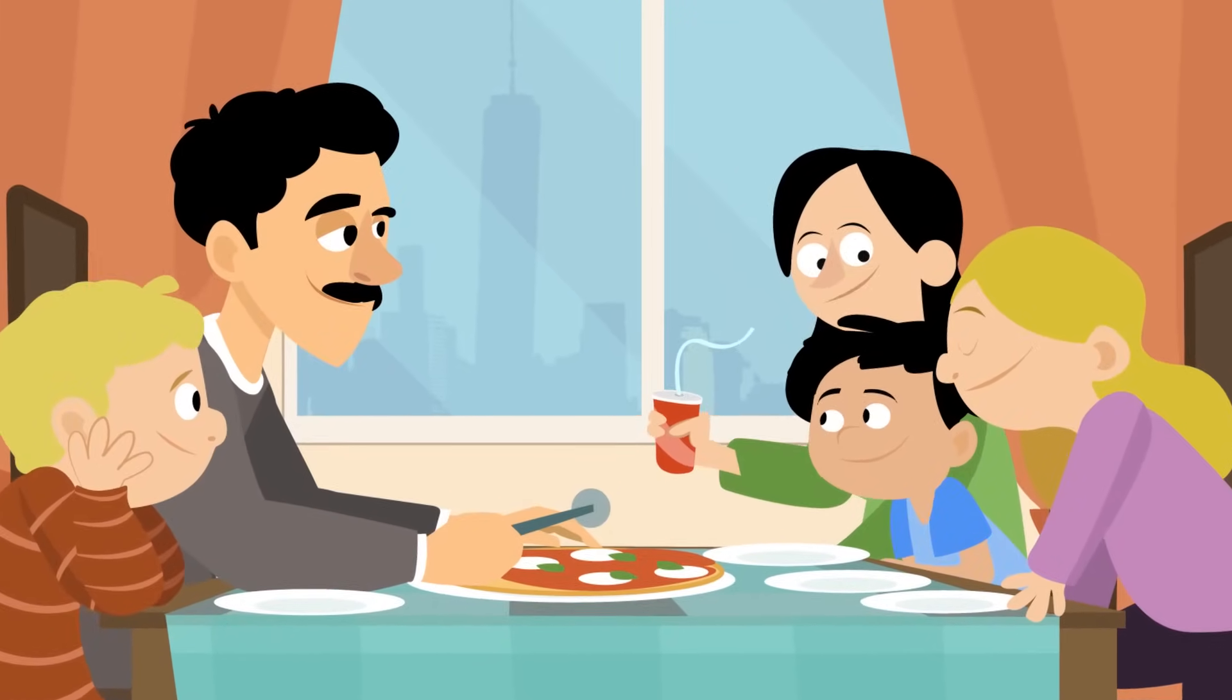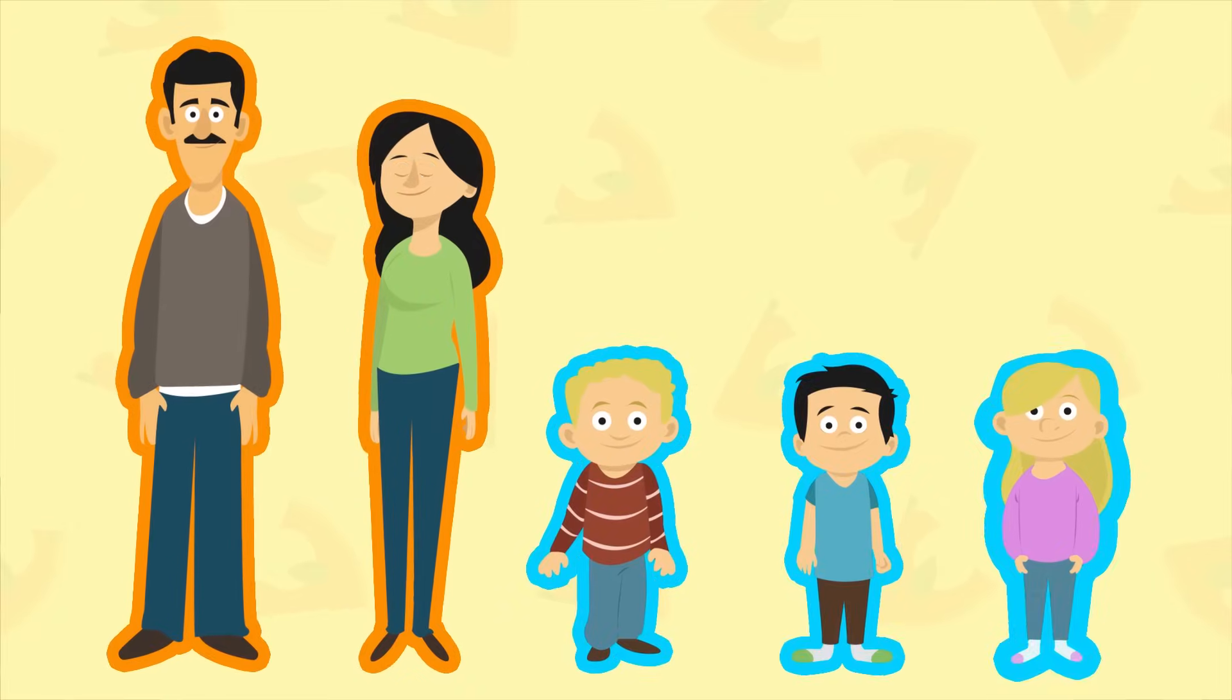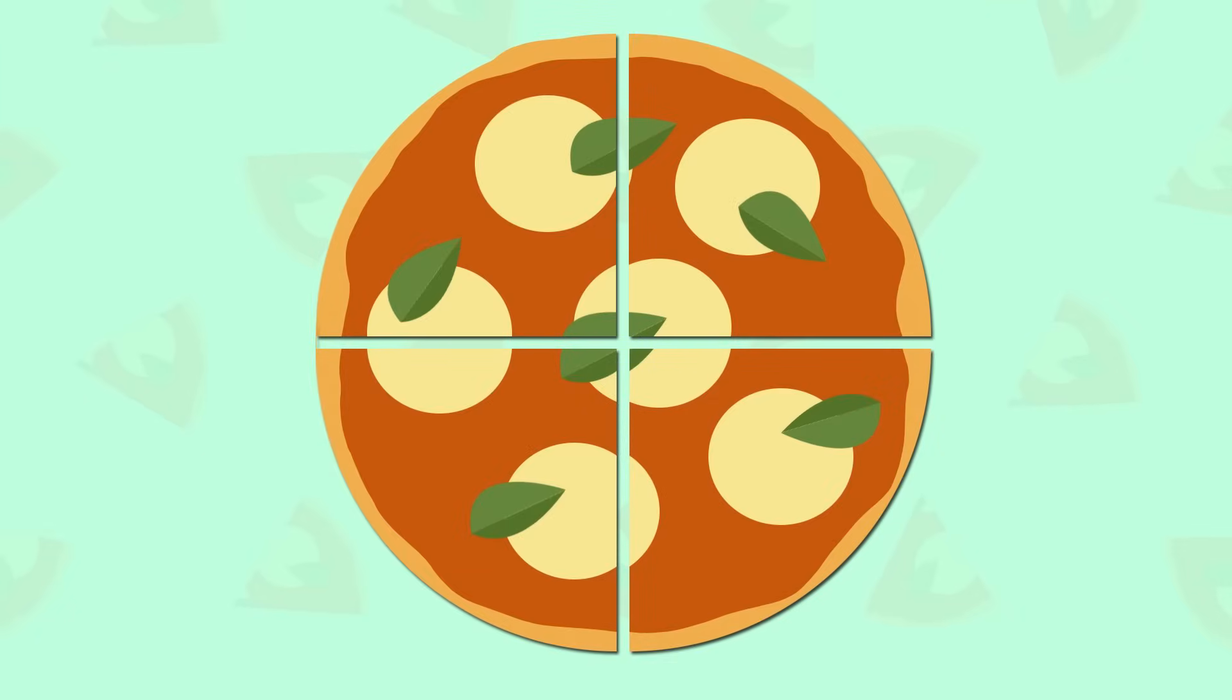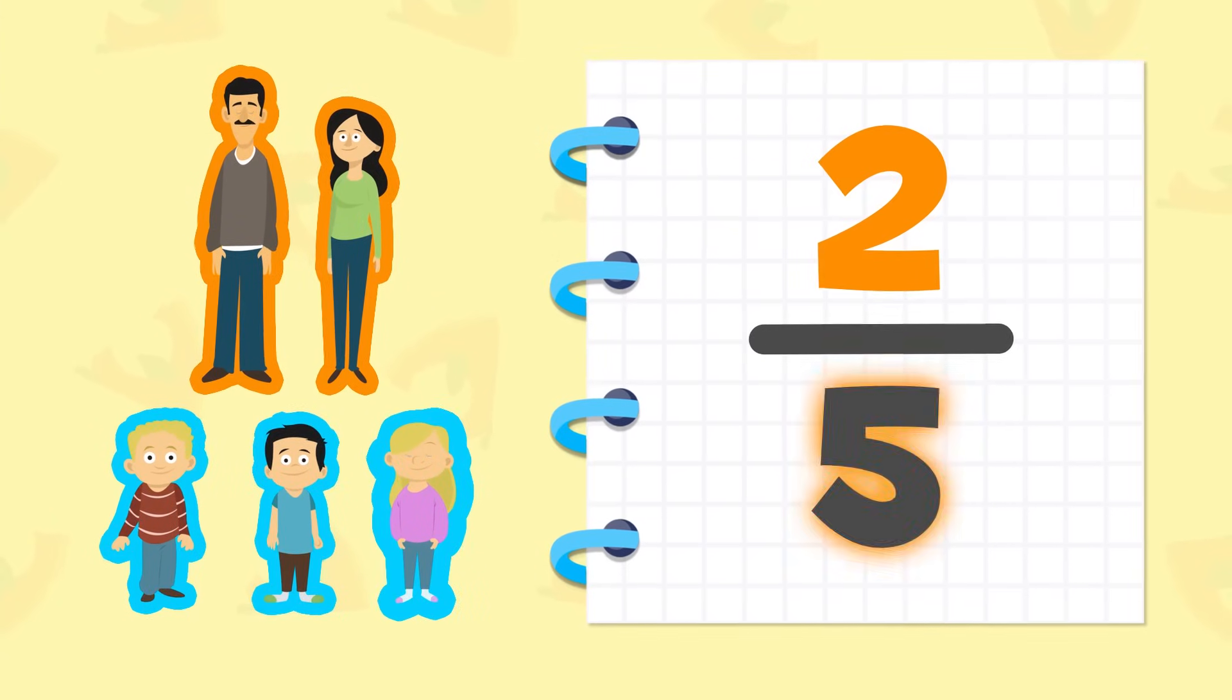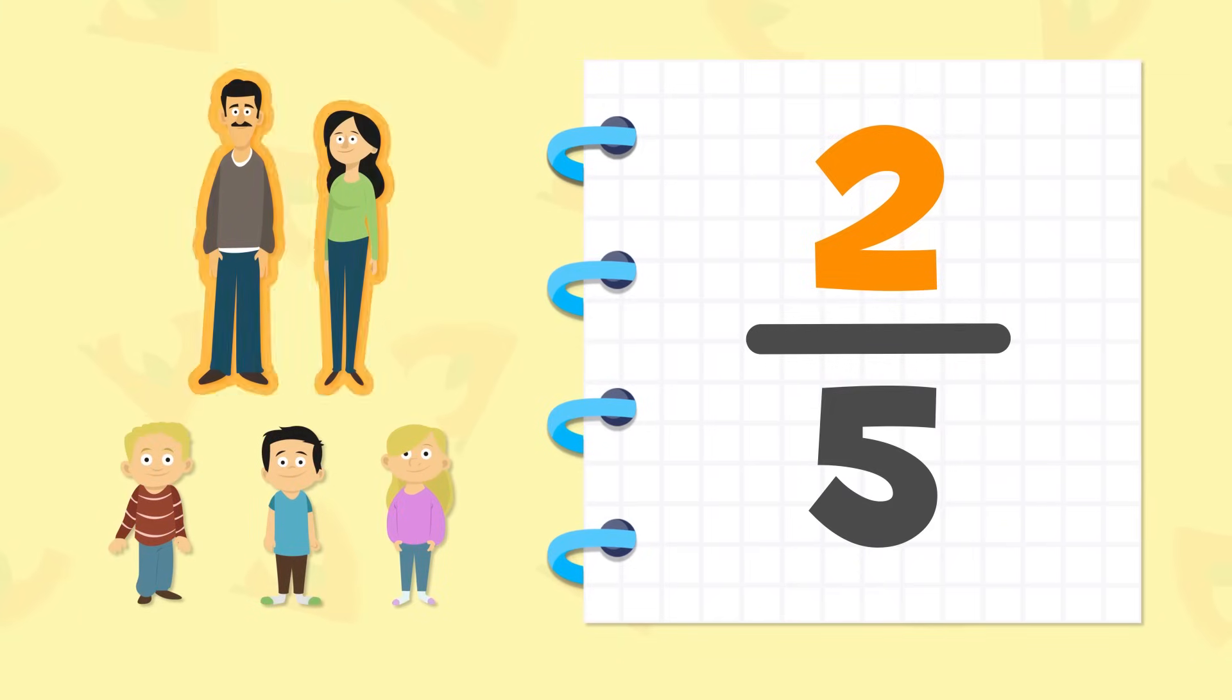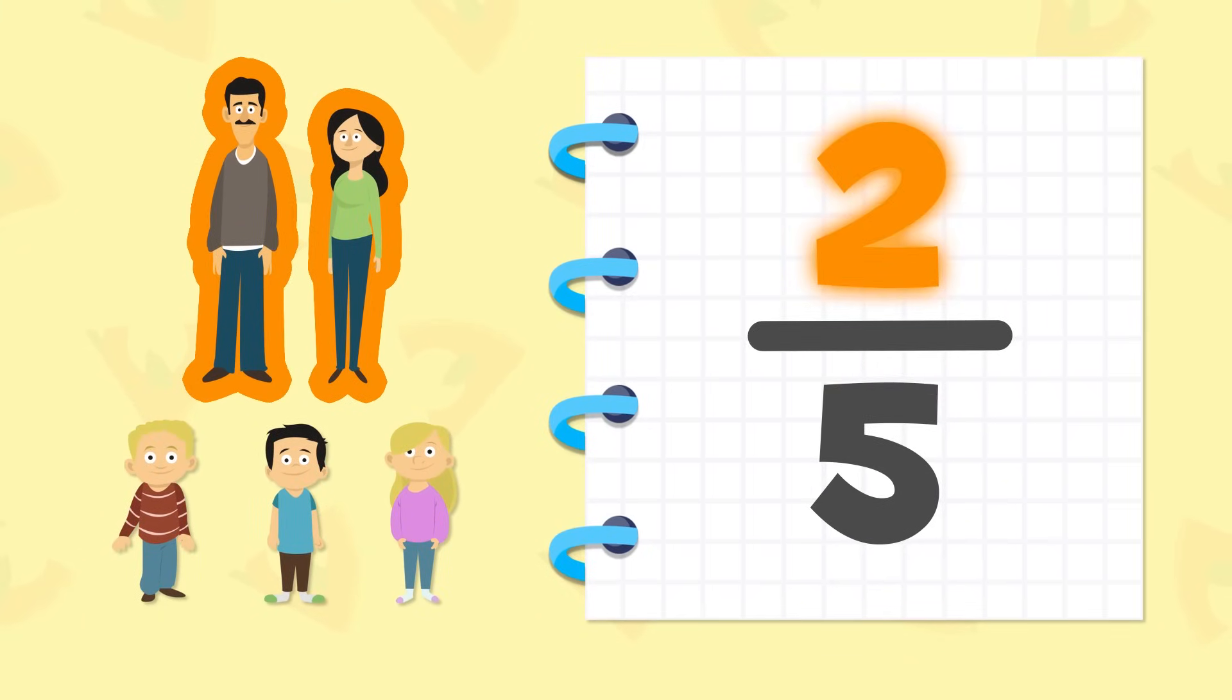But before that, shall we recap? Sure! Let's look at fractions of a group or divisions of objects. For fractions of a group, the denominator represents the number of elements in the group. And the numerator represents the elements we have selected.